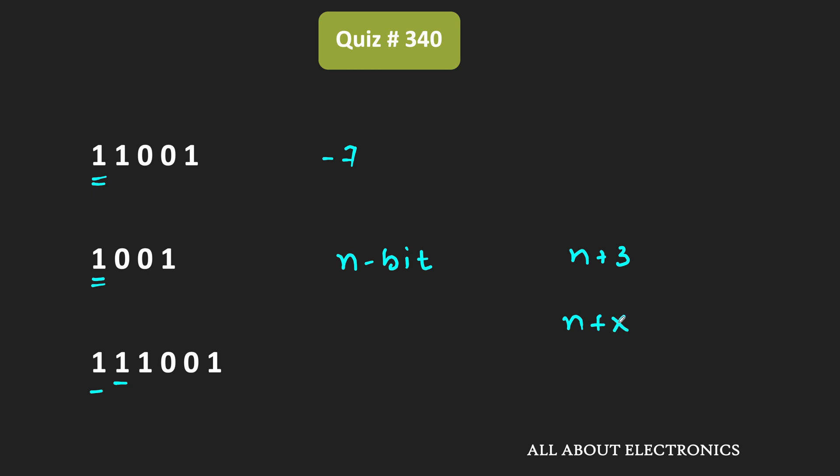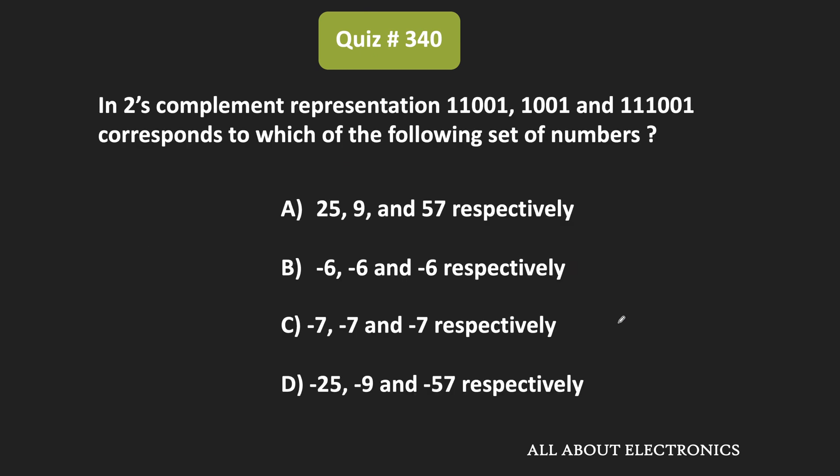Anyway, for the given question, all three numbers represent -7. Therefore, option C is the correct answer.